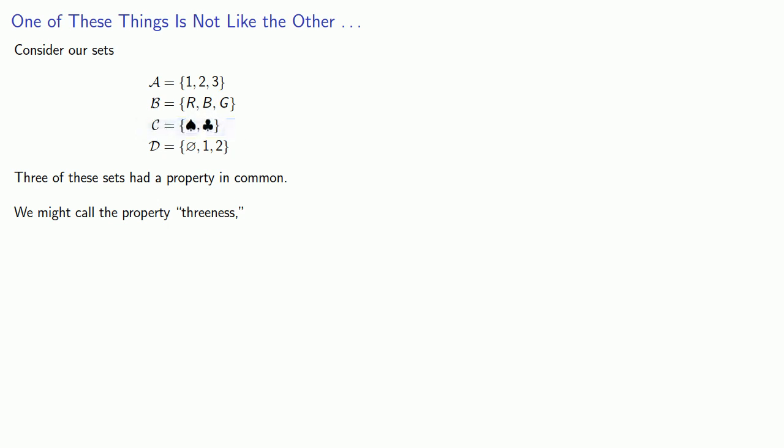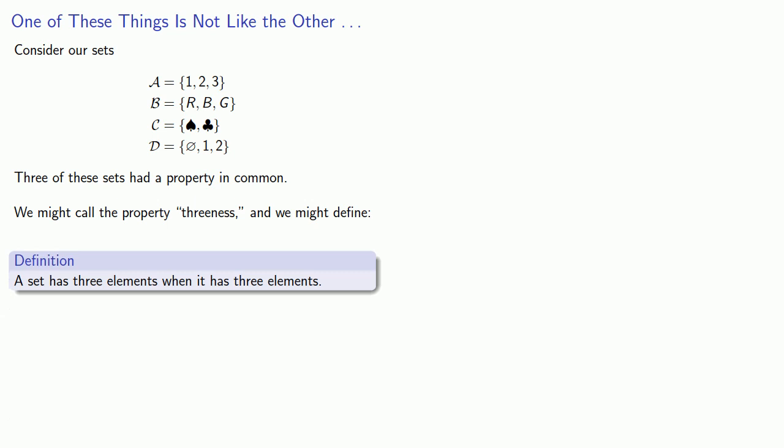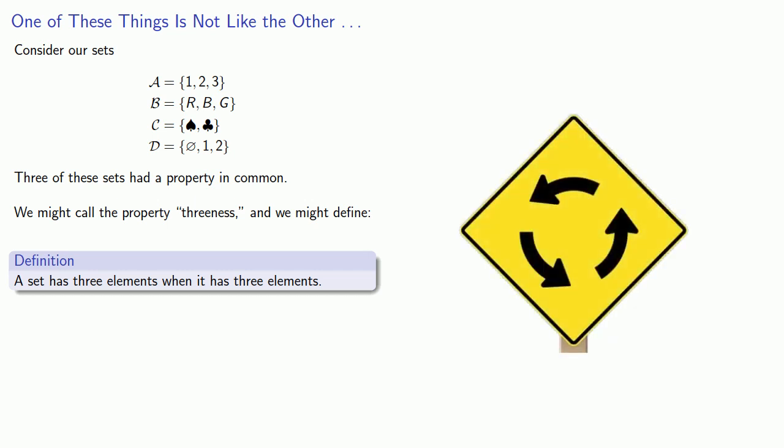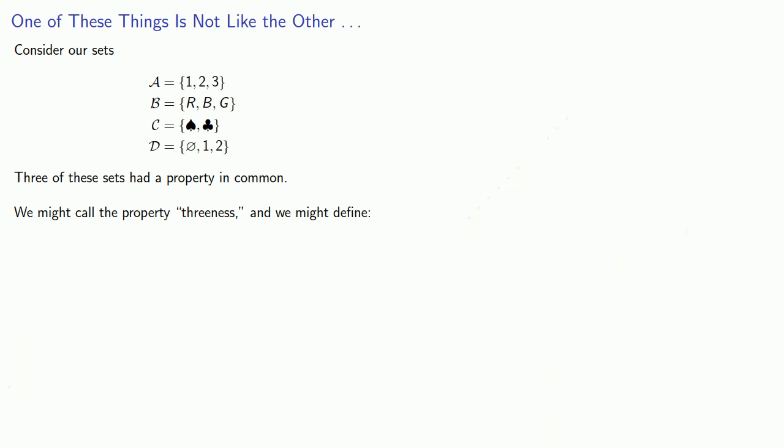Definitions are the whole of mathematics. We might define a set has three elements when it has three elements — but that doesn't work, because we're trying to define something in terms of itself. It's a circular definition, like saying blue is the color of things that are blue. If we can't define three, maybe we can at least give a name to the property we're talking about. So maybe we'll define something called cardinality.